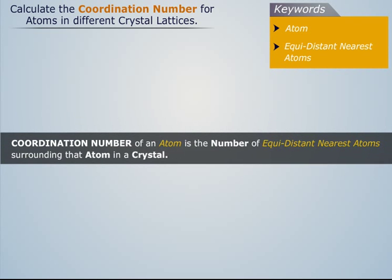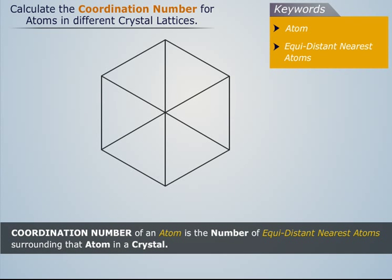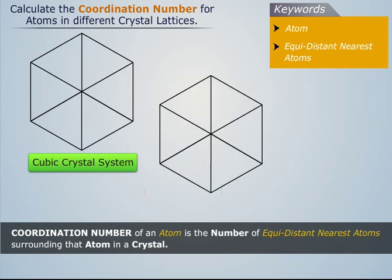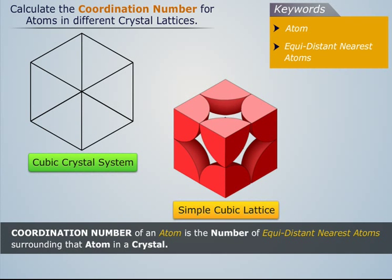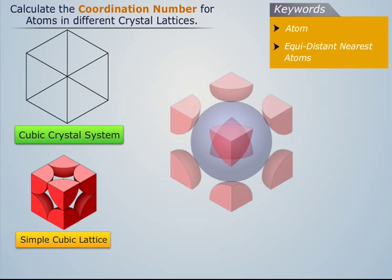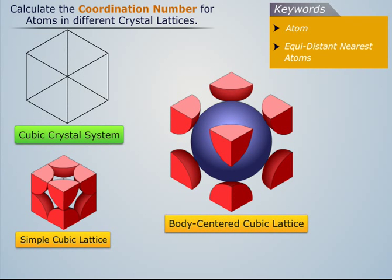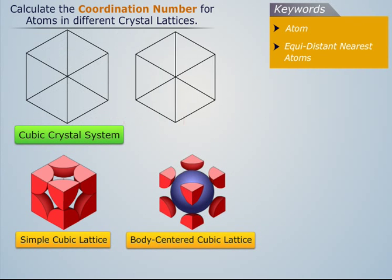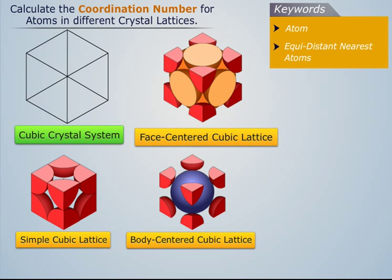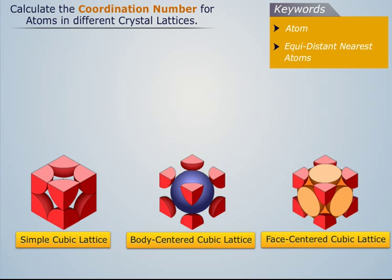Let's consider a cubic crystal system. It can have three Bravais lattices: simple cubic lattice, body centered cubic lattice, and face centered cubic lattice. Now let's try to calculate the coordination number for the atoms of each of these crystal lattices.